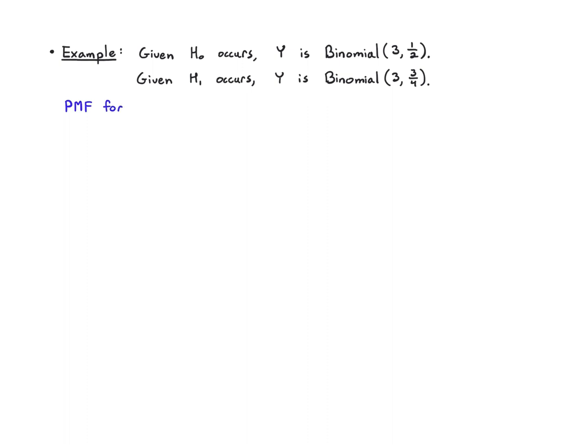Remember that the PMF for binomial np random variable looks like the following. We have the marginal PMF p of x, which is n choose x, p to the x, 1 minus p to the n minus x, and that's when x is 0 up to n, and otherwise it's 0.